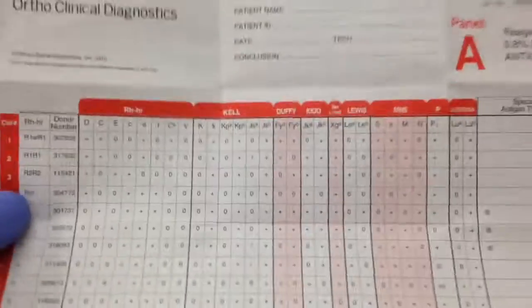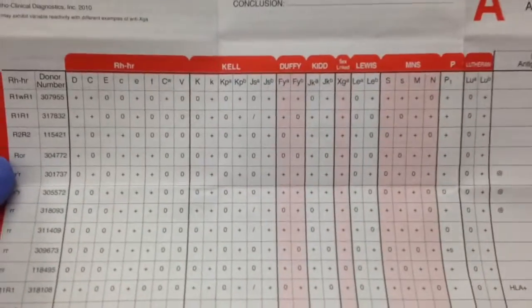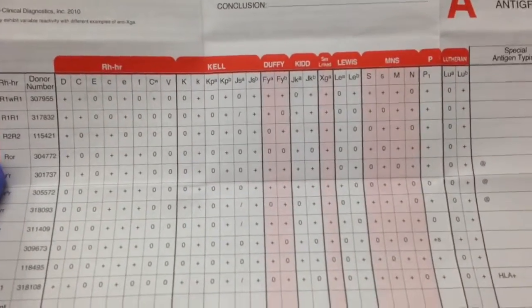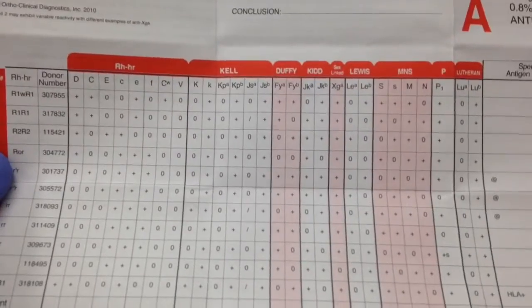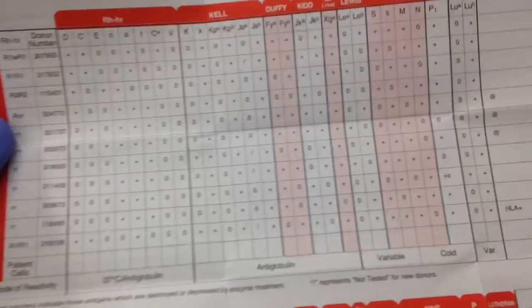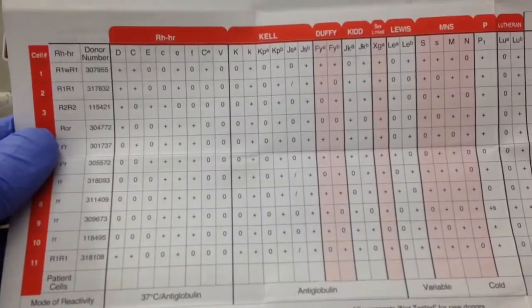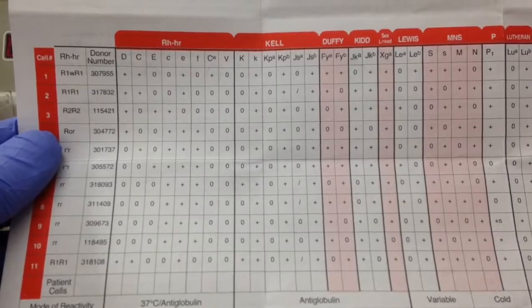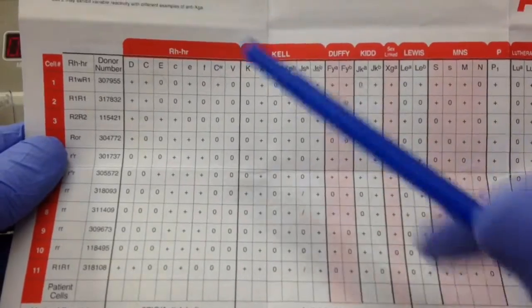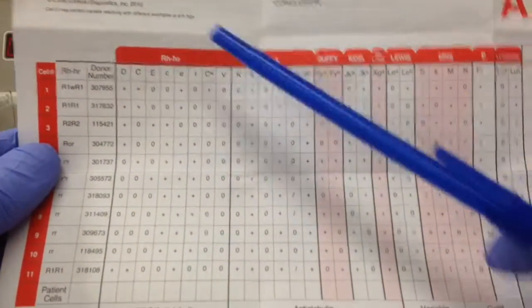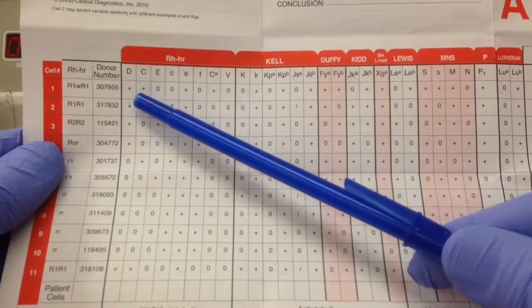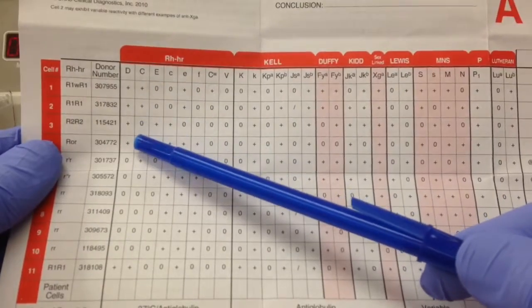In this video, I wanted to talk about a specific type of antibody ID panel — one that involves a patient who has either developed anti-D because they're Rh-negative, or a mother that is Rh-negative and has received RhoGAM.